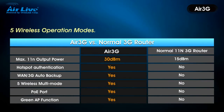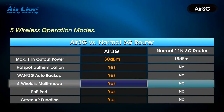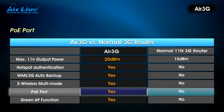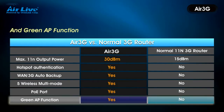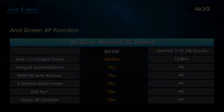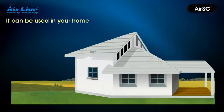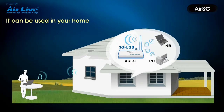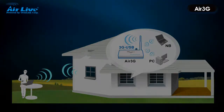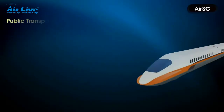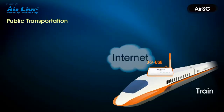The Air 3G features 5 wireless operation modes, an EOE port, and a Green AP function. It can be used in your home or on public transportation.